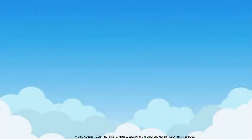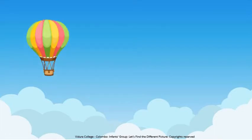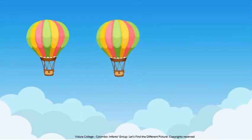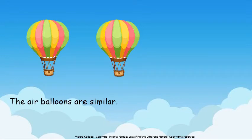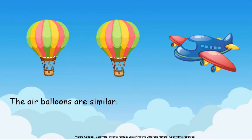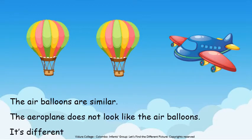Children, what can you see in the sky? Can you all see this air balloon? There is another air balloon. The air balloons are similar in size, color and in its shape. What is this? It is an aeroplane. The aeroplane does not look like the air balloons. Right?